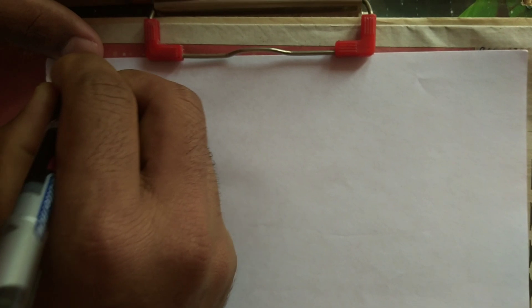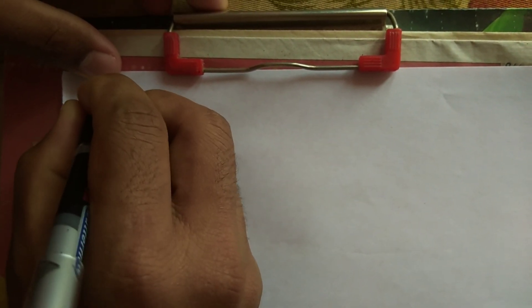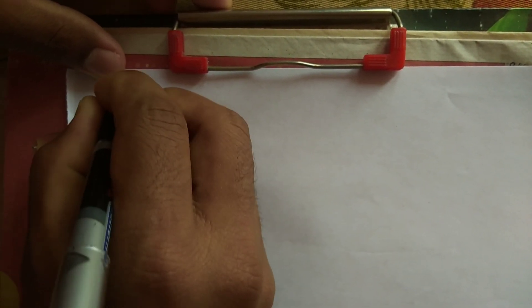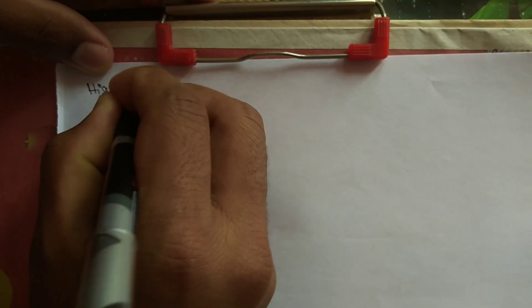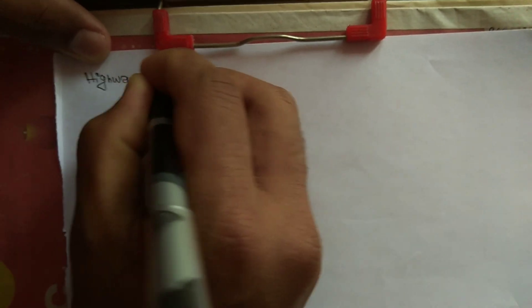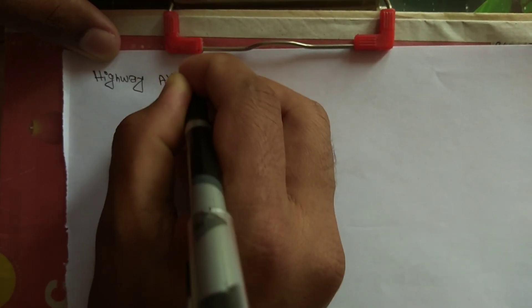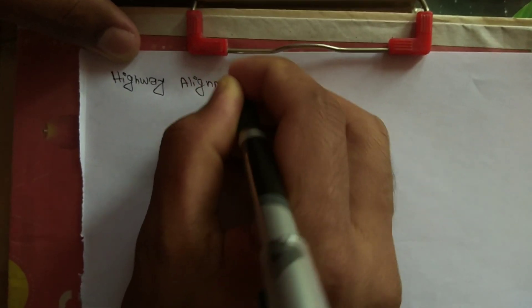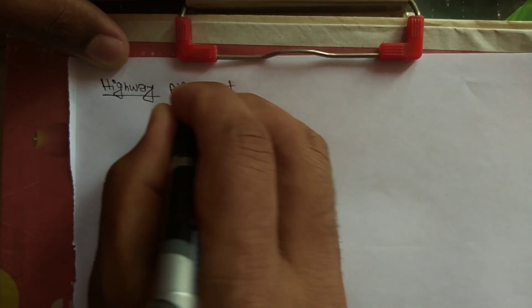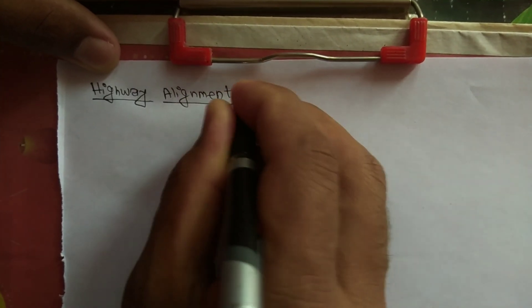So the first is: what is highway alignment? Highway alignment is nothing but the position or the layout of the center line of the highway on the ground.